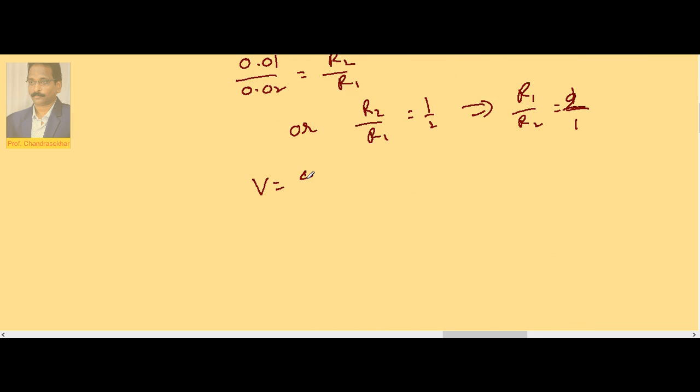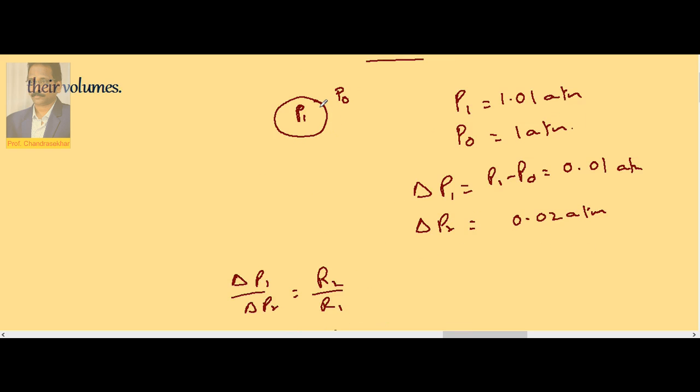So V1 by V2 is equal to R1 by R2 whole cube, so it is 8 or 8 is to 1. Here the total pressure inside is given, atmospheric pressure is always 1 atmosphere.